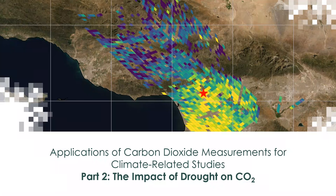Welcome to the second session of this RCEP webinar on applications of carbon dioxide measurements for climate-related studies. My name is Erika Podest and I am an RCEP instructor and a scientist at NASA's Jet Propulsion Laboratory where I study terrestrial ecosystems with satellite data. Today's session will focus on the impacts of drought on CO2, starting with a theoretical part followed by a demonstration on how to access and analyze OCO2 data in relation to drought impacts.